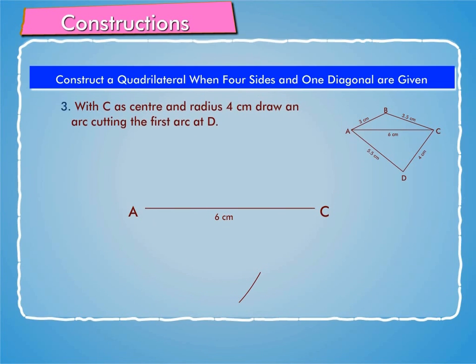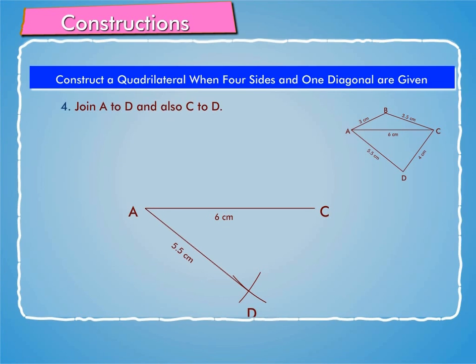Step 3: With C as center and radius 4 cm, draw an arc cutting the first arc at D. Step 4: Join A to D and also C to D.